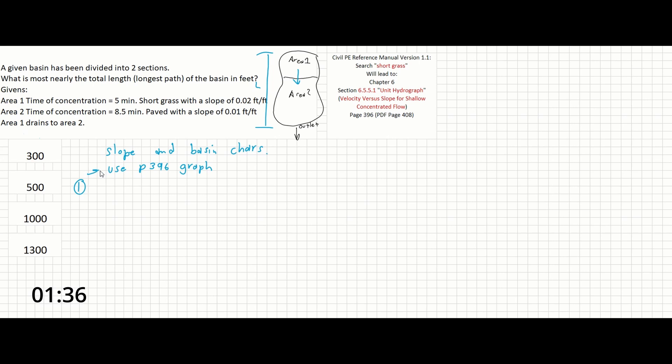Let's get started. If we look at page 396 of the manual, if we trace over from the slope of 0.02 to short grass, and then trace down, this gives us a velocity of 1 foot per second.